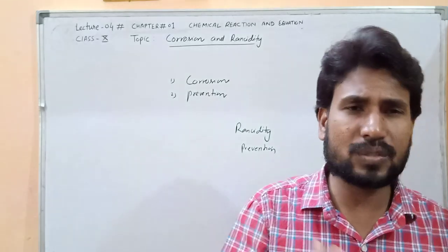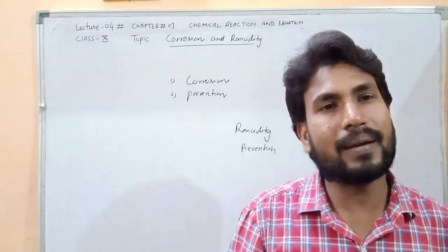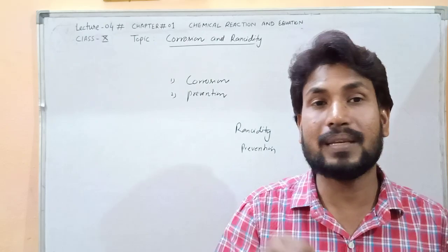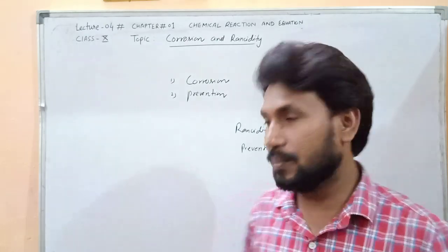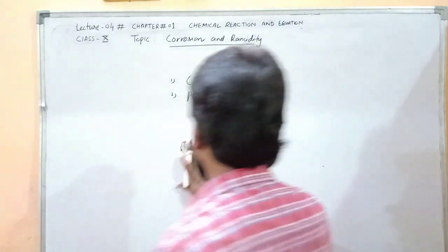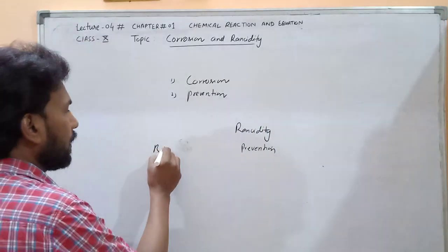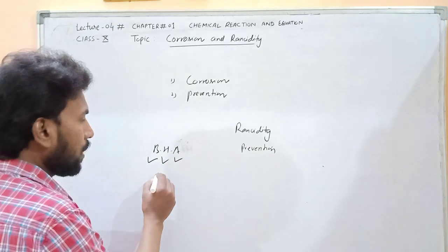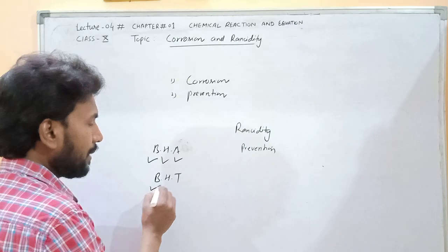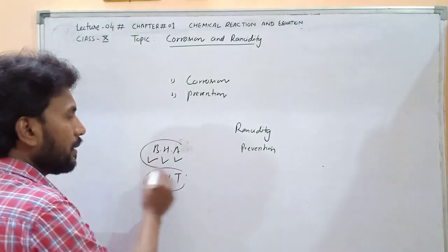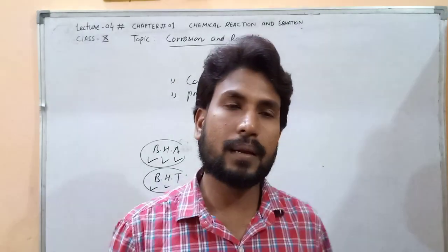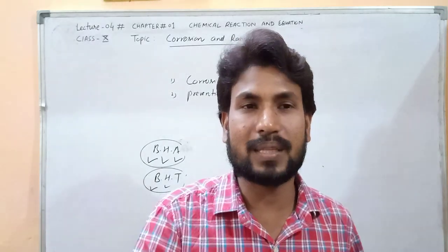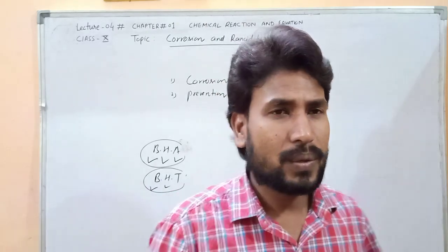Third, we have antioxidants which prevent rancidity. Examples include BHA (butylated hydroxyanisole) and BHT (butylated hydroxytoluene). These are chemical compound antioxidants that inhibit the oxidation process.